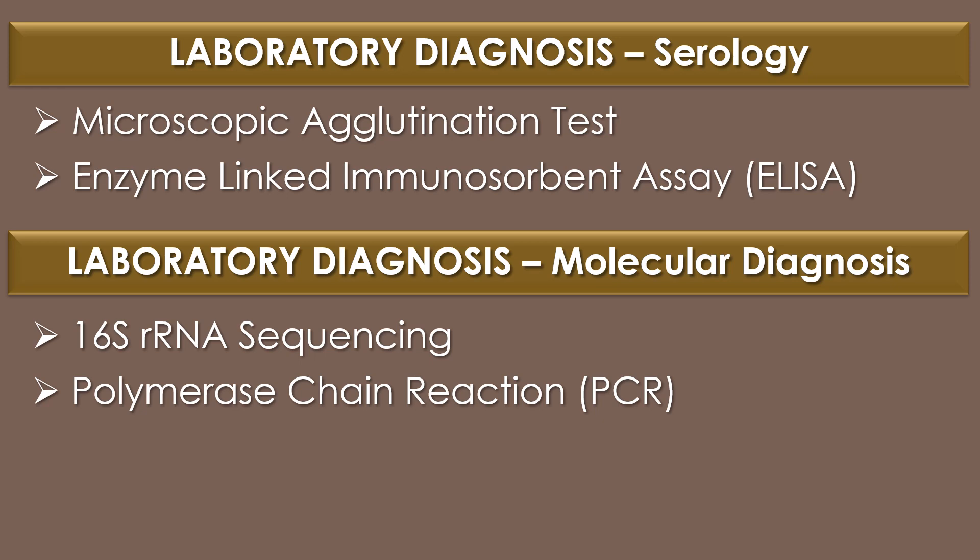Microscopic agglutination test and enzyme-linked immunosorbent assay (ELISA) are the serological tests used for the diagnosis of Leptospira introgons. For molecular diagnosis, 16S rRNA sequencing and polymerase chain reaction (PCR) are widely used.